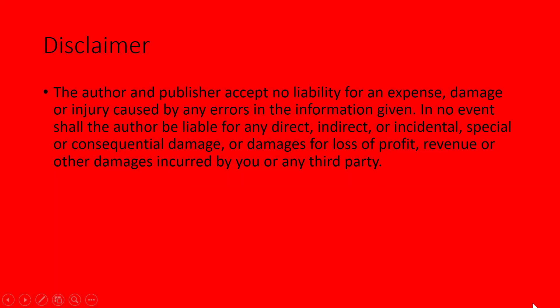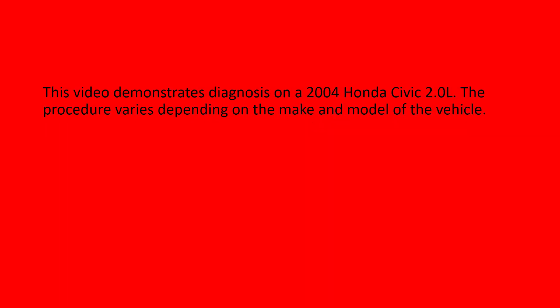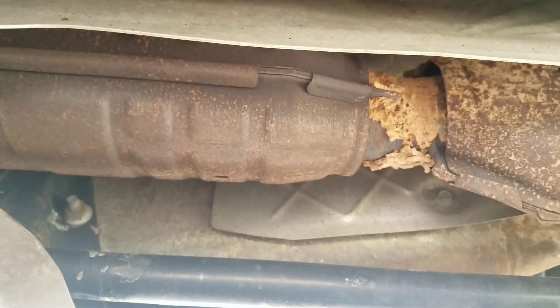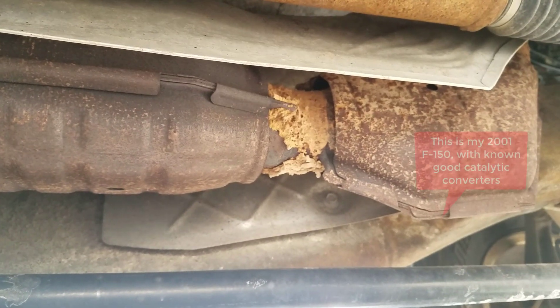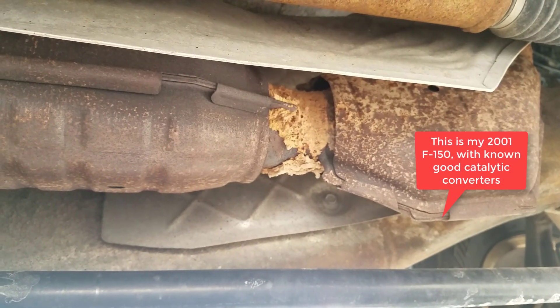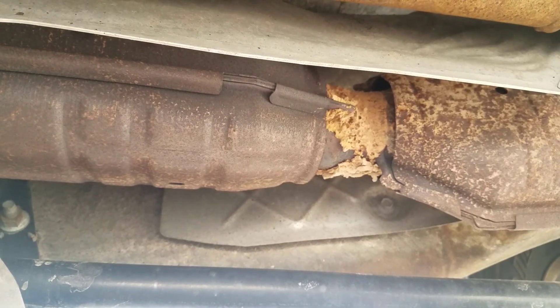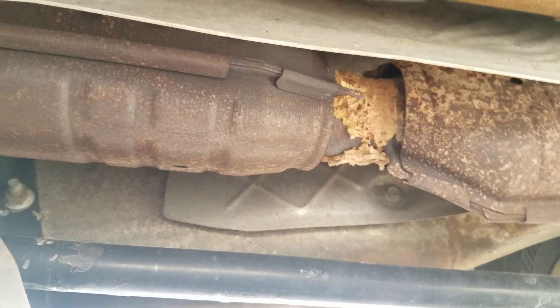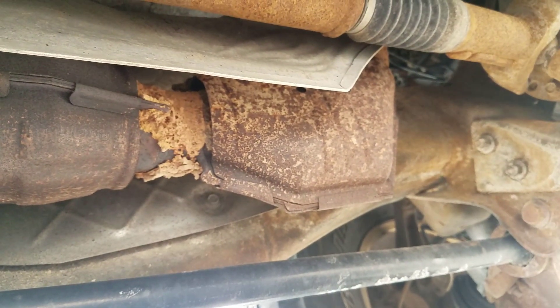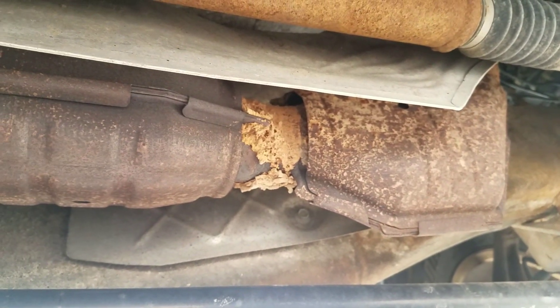My name is Mia and today we're going to be discussing Code P0420, Catalyst Deficiency Below Threshold. The catalytic converter is used to control harmful emissions, and a three-way catalytic converter like this controls oxides of nitrogen, hydrocarbons, and carbon monoxide. A chemical reaction inside the catalytic converter reduces these emissions out of the tailpipe.